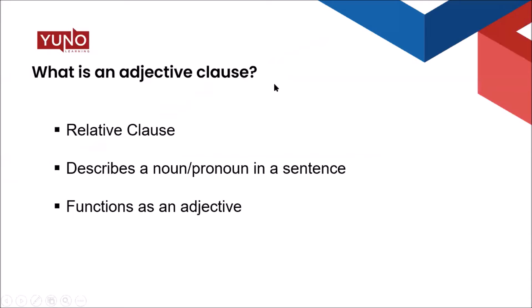What is an Adjective Clause? An Adjective Clause or Relative Clause is a type of dependent clause that works to describe a noun in a sentence. It can function as an adjective even though it is made up of a group of words instead of just one word. In the case of an Adjective Clause, all the words work together to modify the noun or pronoun.